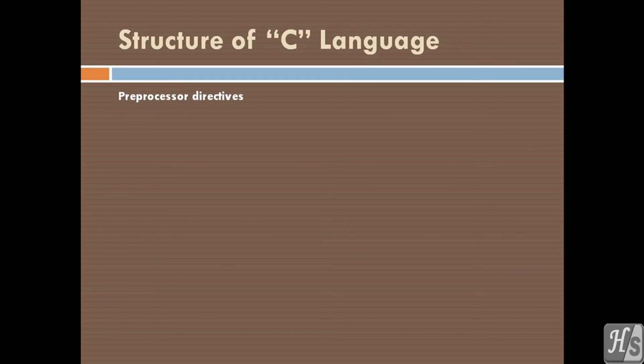For example, hash include stdio.h. Every C program has one or more functions. Function is a program which performs well-defined task or consists of instructions to execute. A program must have one function and it must be main. Other functions are user-defined functions.